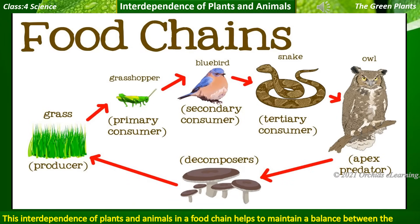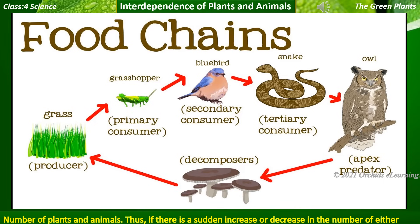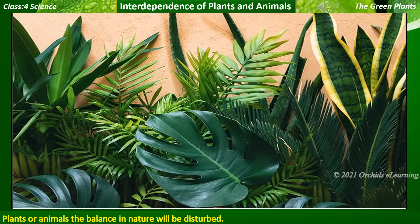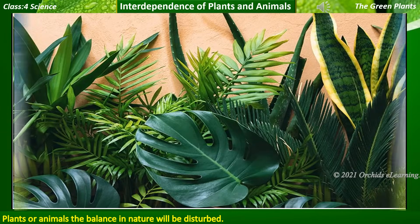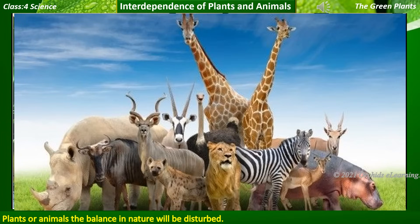This interdependence of plants and animals in a food chain helps to maintain a balance between the numbers of plants and animals. Thus, if there is a sudden increase or decrease in the number of either plants or animals, the balance in nature will be disturbed.